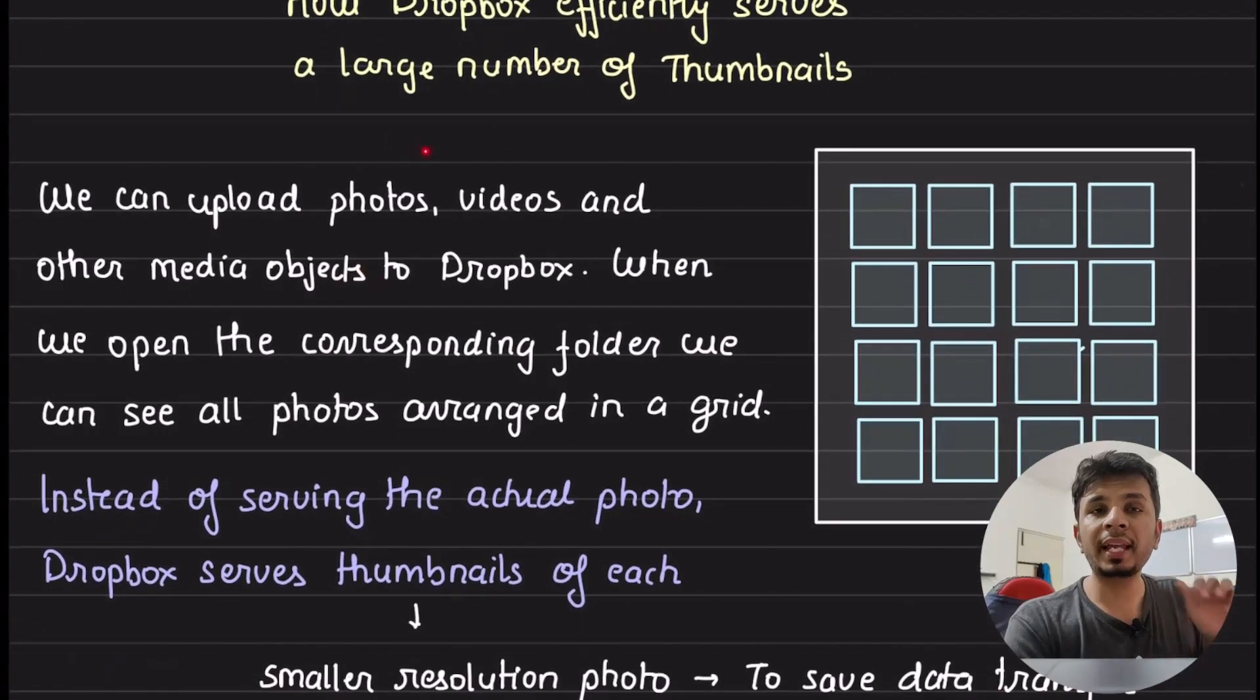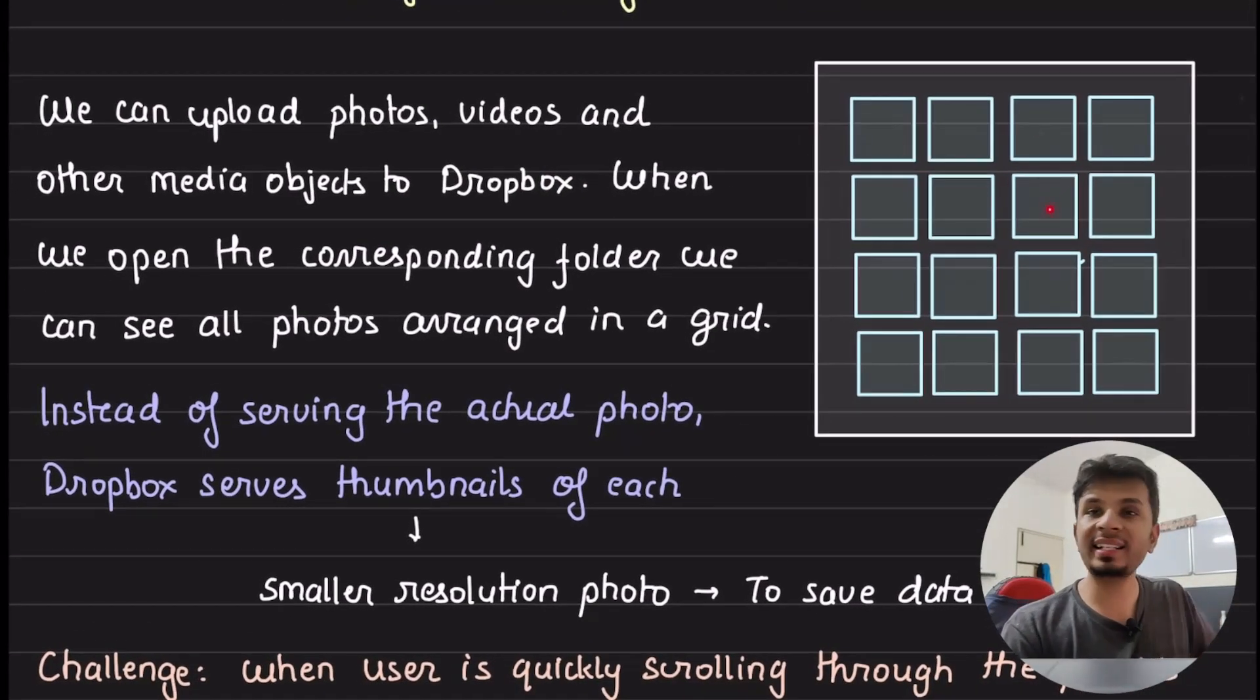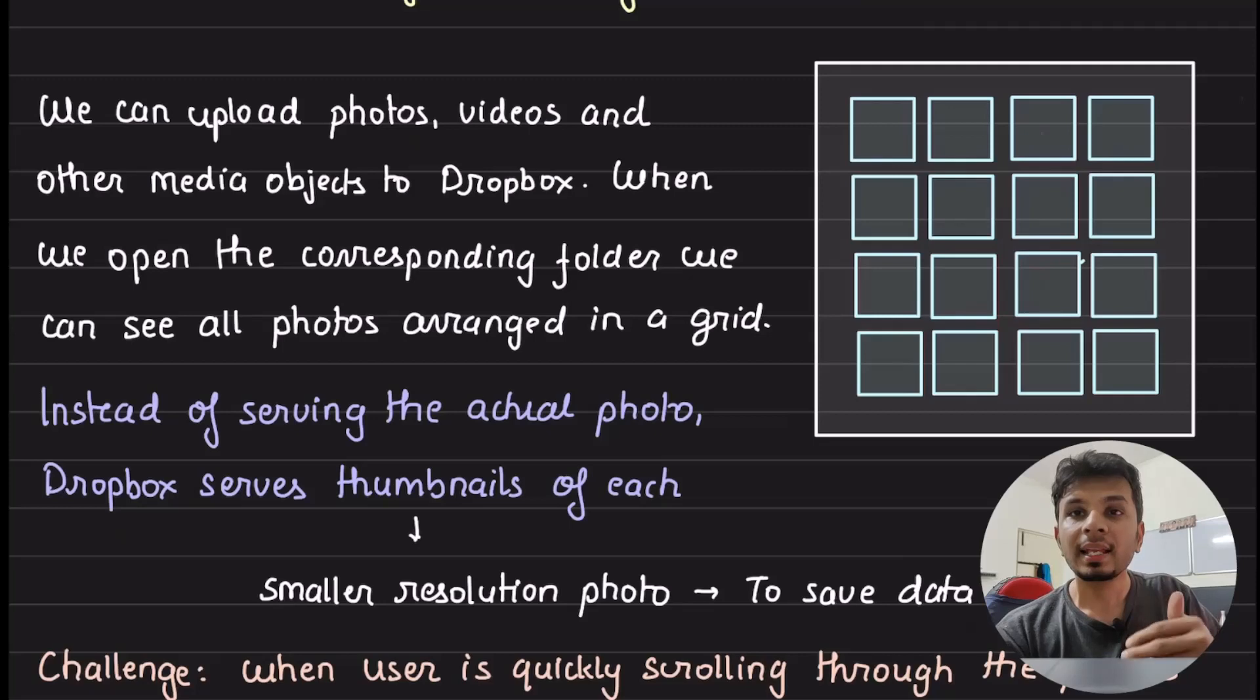So on Dropbox, we can upload photos, videos and other media objects. And when we open that corresponding folder, what we see is a series of photos. What we typically see is thumbnails and when someone taps on it, we see the enlarged photo. So how do you get that?